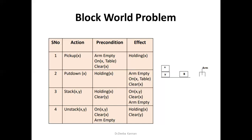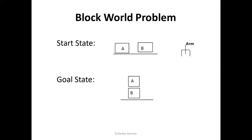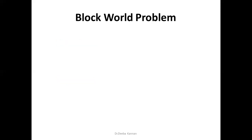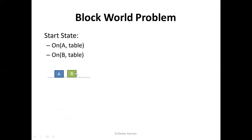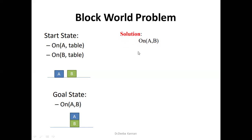If we define these actions, then we can do what we need with the initial state and goal state. We can rearrange using these functions. Let's take a simple example: there are two blocks A and B. There is a table and the arm head is empty — this is the starting state. The goal state is A on B. Initial state: A is on the table and B is on the table. Goal state: A is on B. A is on top of B — this is our goal state. We can do this with the stack function.